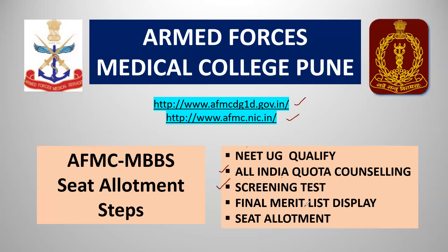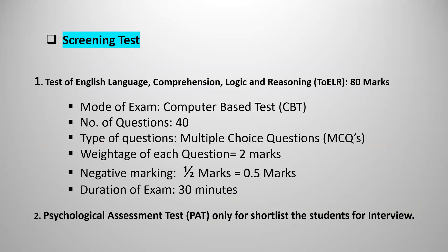You can do seat allotment from this final merit list, step by step. Now, we will look at the screening test stages. There are four stages. The first stage is TOELR — the computer-based test. Every student has a shortlist. TOELR stands for Test of English Language, Comprehension, Logic and Reasoning. This is a computer-based test.